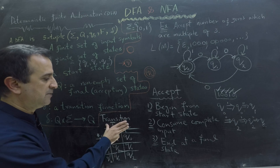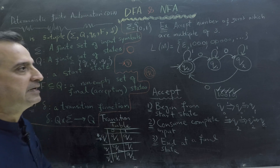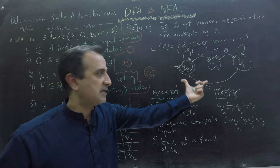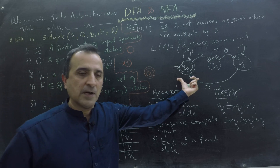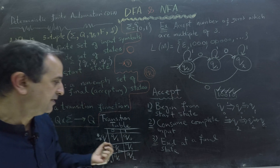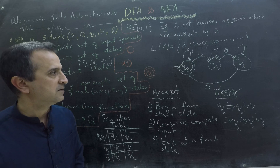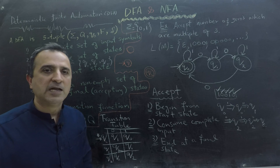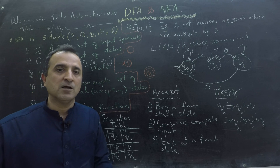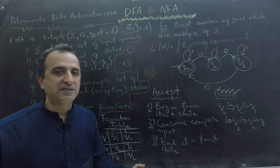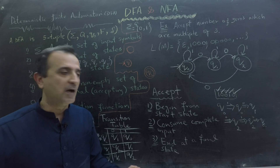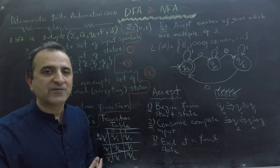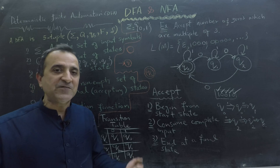Given a transition table, I can create this diagram, and given this diagram, I can create a transition table. Now let me clear the board and we will learn what non-deterministic finite automata is and how it differs from deterministic finite automata, and which one is better.